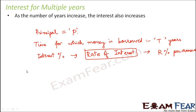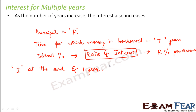If we calculate the interest at the end of one year, the interest I would be R percent of the principal amount P, since it is paid one time only after that one year. So interest at end of one year = R% of P = R/100 × P.